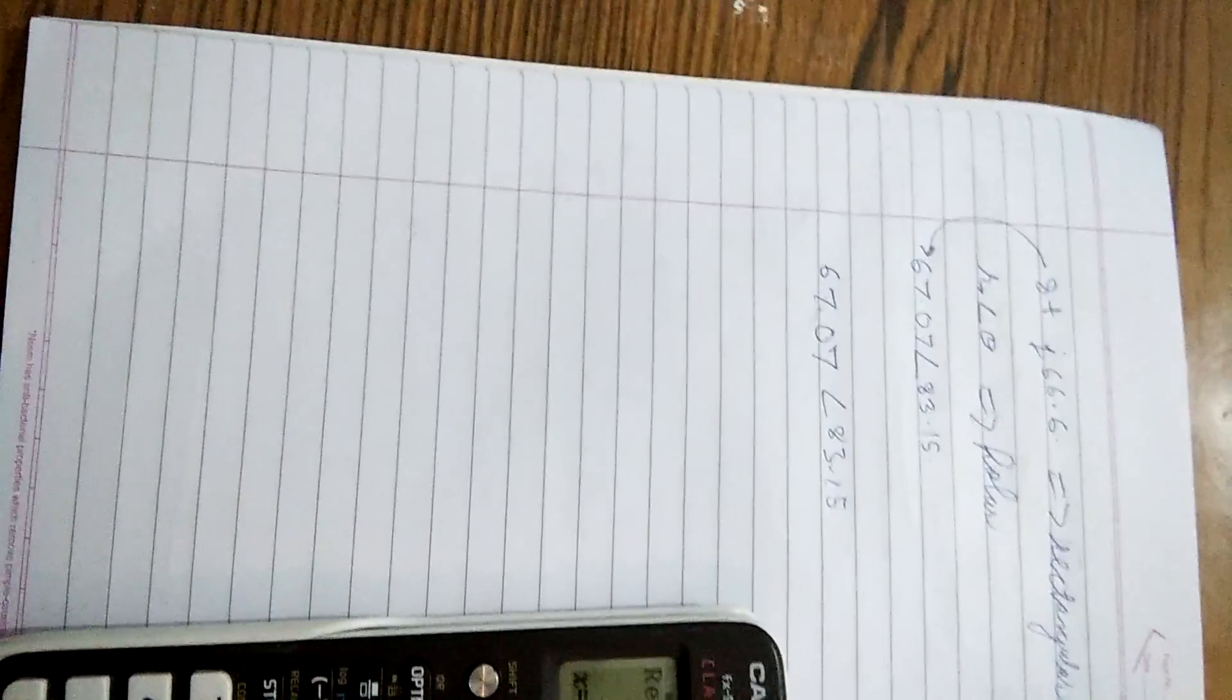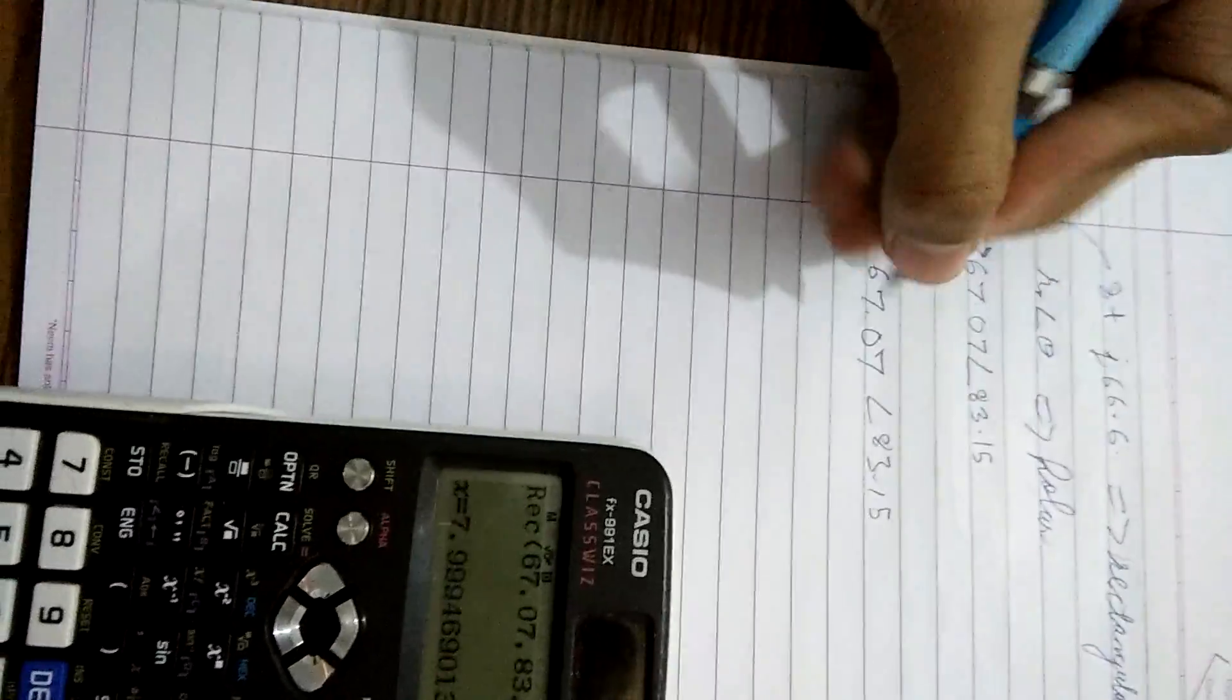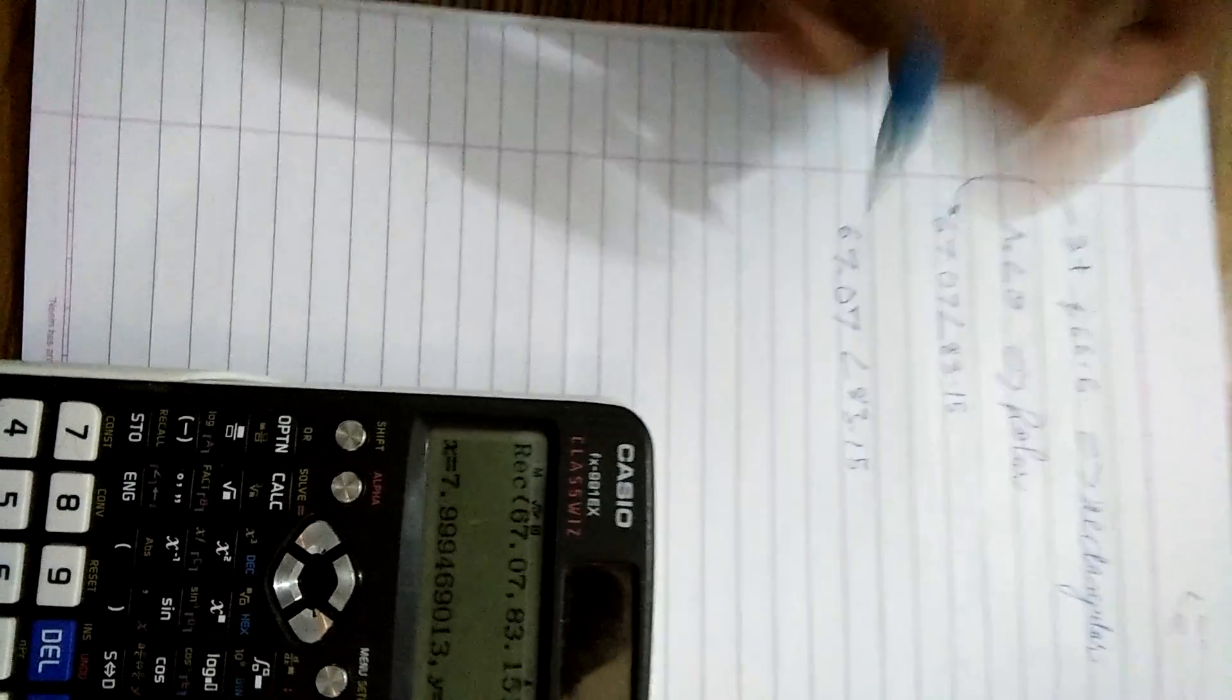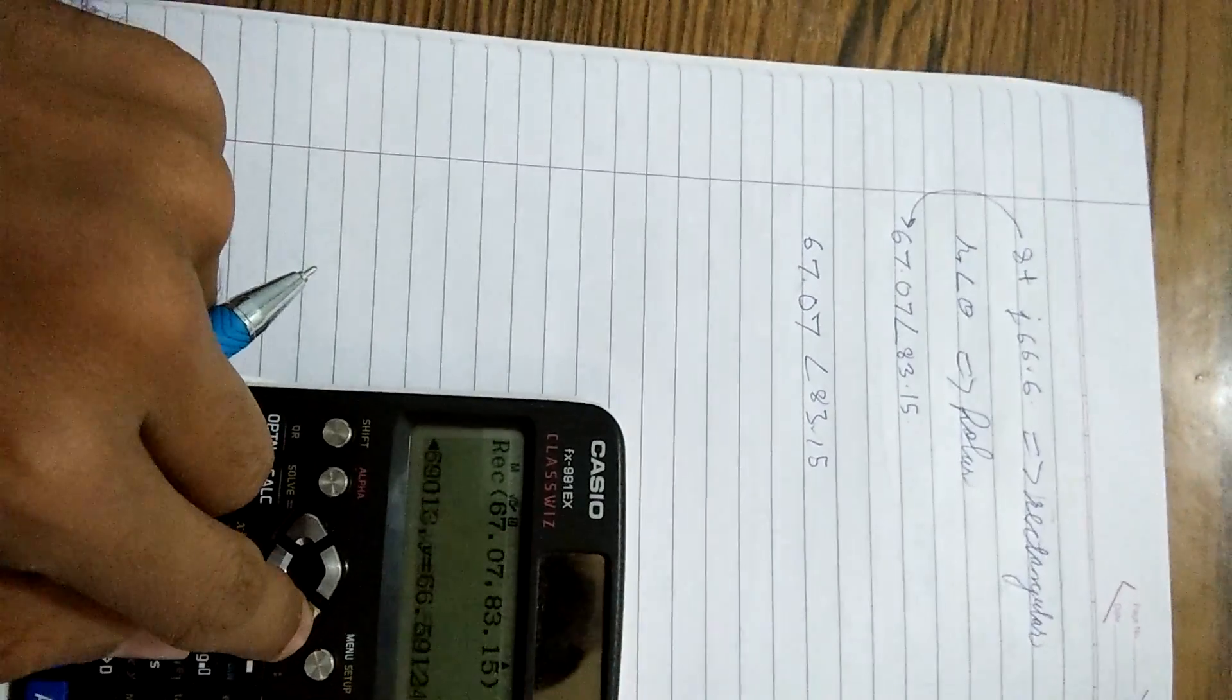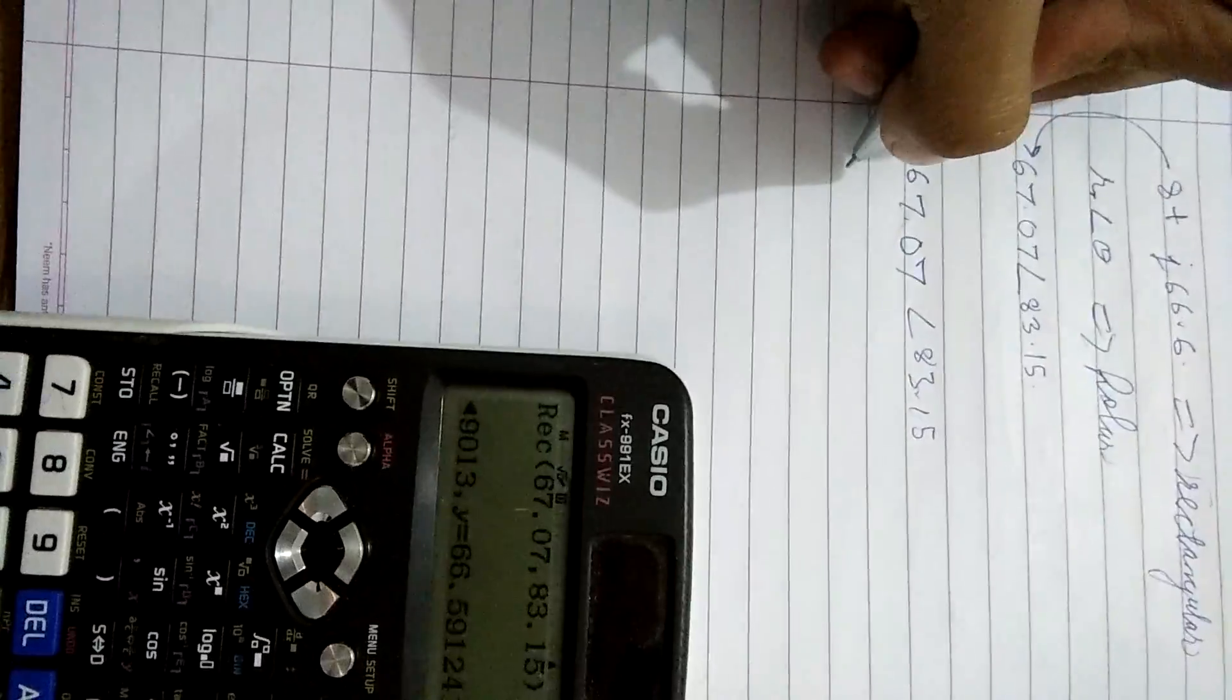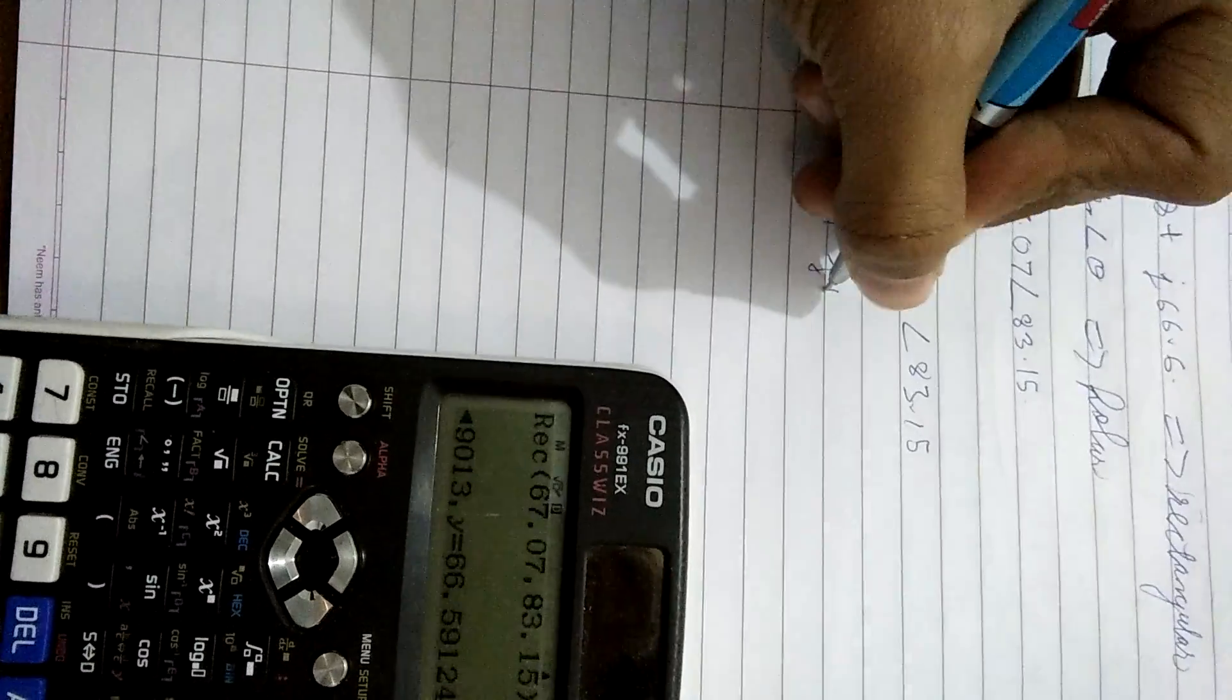We are getting x as 7.99 and y as 66.59. The rectangular form will always be in the form of x plus jy.